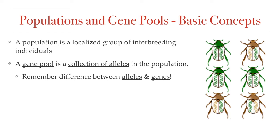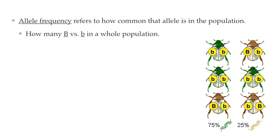All the beetles have that gene in their DNA, and all the beetles — each of them — have two copies of the gene: one they inherited from mom, and one they inherited from dad. But there is genetic variation for that particular gene in this population. As a matter of fact, there are two possible alleles for that gene: a dominant allele that codes for brown coloration, which will be denoted by a capital B, and a recessive allele that codes for green coloration, denoted by a lowercase b. We can actually quantify or count how common each of those alleles are in the gene pool of this beetle population.